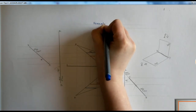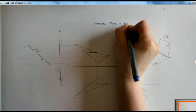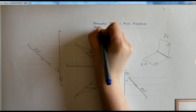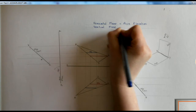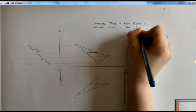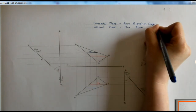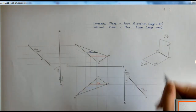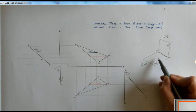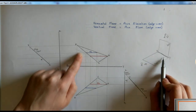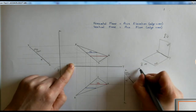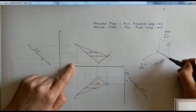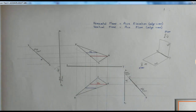To summarize: horizontal plane equals an auxiliary elevation edge view, and vertical plane equals auxiliary plan edge view. Just to recap — if I stand here and look in, my horizontal plane becomes the xy line in my elevation because this is the elevation view. If I stand up here in the plan view and look down, my vertical plane becomes the xy line in the plan. That's how we get the angles that the planes make.